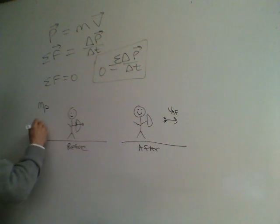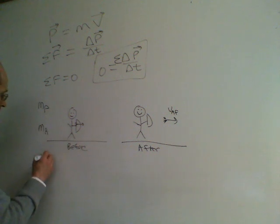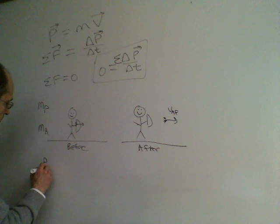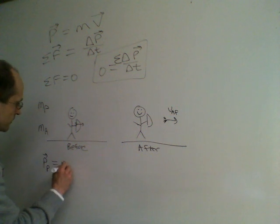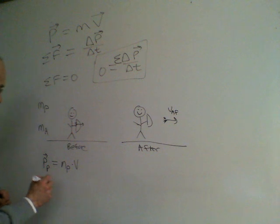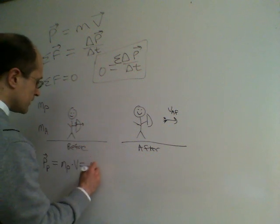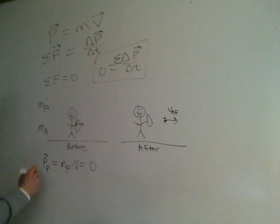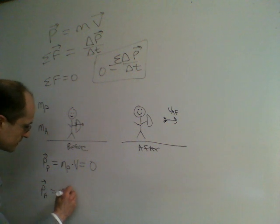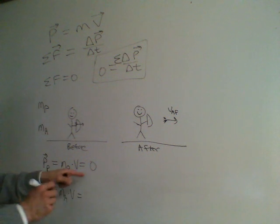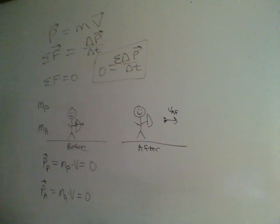Initially, the momentum of the person is mass of the person times their velocity. Since the person is just standing there, they have zero momentum. Similarly, the momentum of the arrow is mass of the arrow times its velocity, and since the arrow isn't moving either, that is also zero.